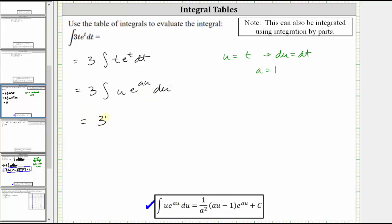Now integrating, we have three times one divided by a squared, which is one divided by one squared, times the quantity au minus one, which is one t minus one, times e to the power of au, which is e to the power of one t plus c. And now let's go ahead and simplify.